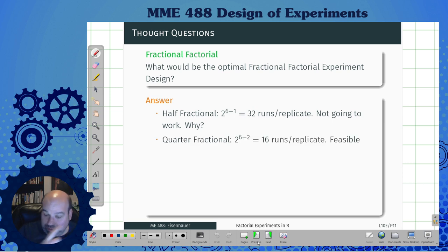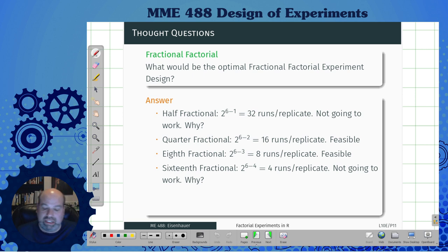Quarter fractional, well that's 16 runs per replicate. That might actually work. We can actually run this twice at least and get some variance, calculate some error. Eighth fractional, sure that can work too. We can actually run the whole thing five times, which would really give us some good indications on what the error is going to be. Get us a better feeling about what's going on here. We use up exactly the amount of resources we had available.